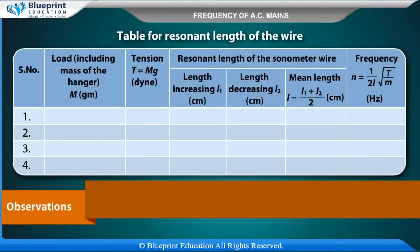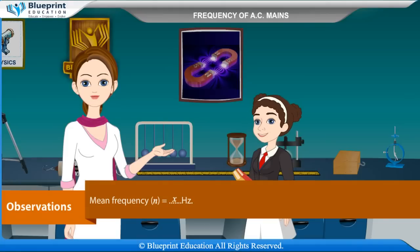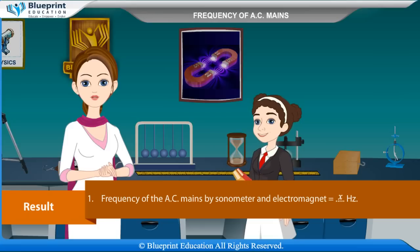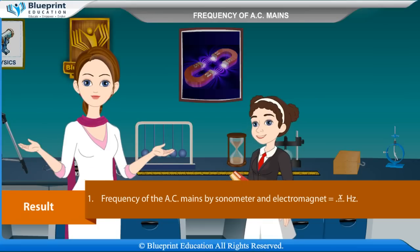Table for resonant length of the sonometer — columns: Serial number; Load including mass of hanger M (grams); Tension T = mg (dynes); Resonant length while length increasing L₁ (cm); Resonant length while length decreasing L₂ (cm); Mean length L = (L₁ + L₂)/2 (cm); Frequency N = 1/(2L) × √(T/M) (Hz). Mean frequency N = x Hz. Result: Frequency of the AC mains by sonometer and electromagnet = x Hz.